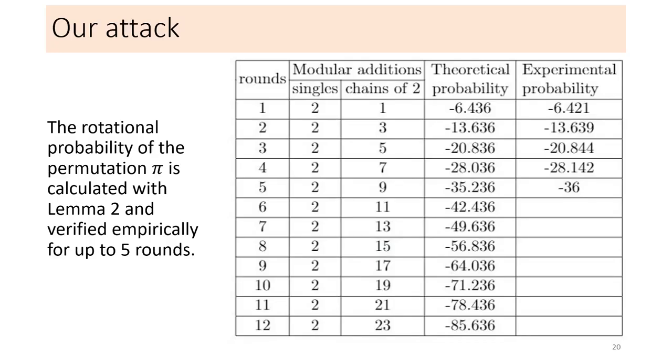In this table, we can see how many single and chained additions we have for any number of rounds until 12. Additionally, the corresponding rotational probability is noted, calculated with lemma 2, which is the new formula, and the probability calculated experimentally up to five rounds because of the data complexity.